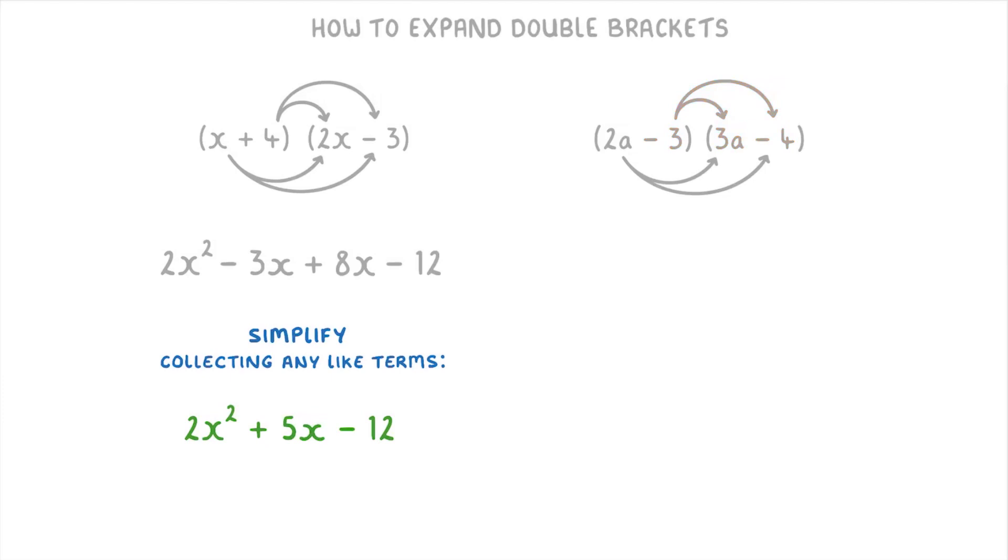Next, we just work out all of our multiplications. So 2a times 3a, which is 6a squared. 2a times minus 4, which is minus 8a, minus 3 times 3a, giving us minus 9a, and minus 3 times minus 4, which is positive 12.